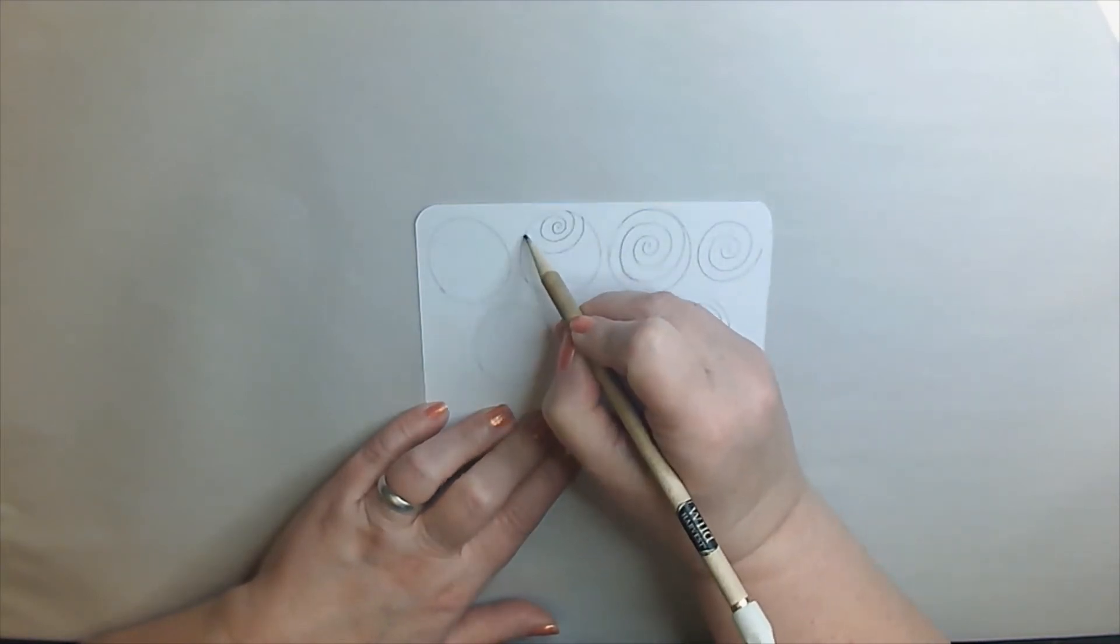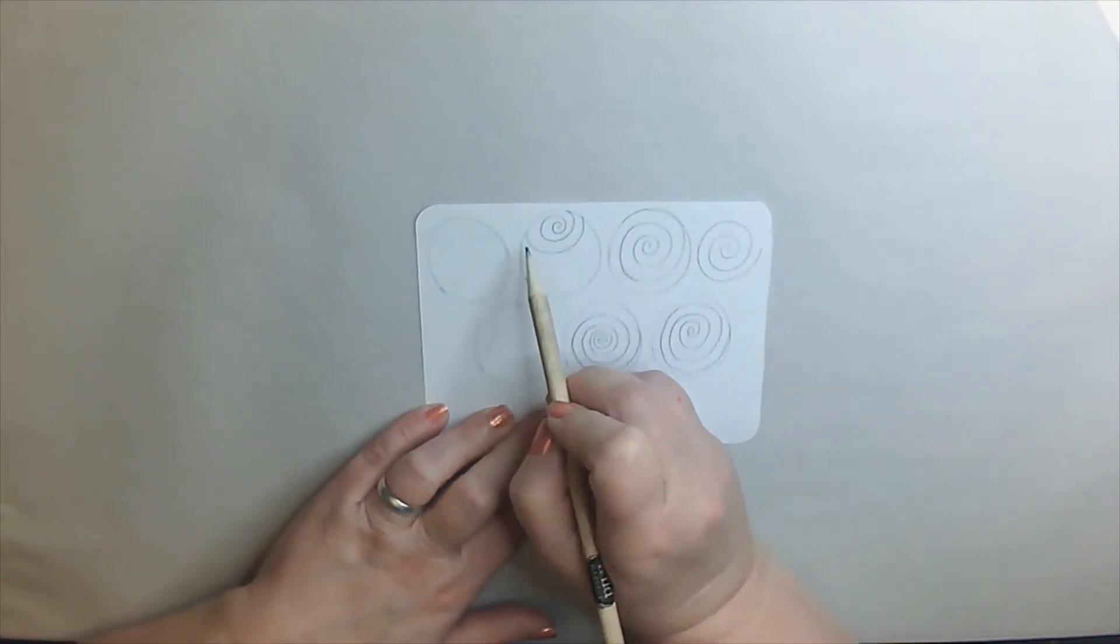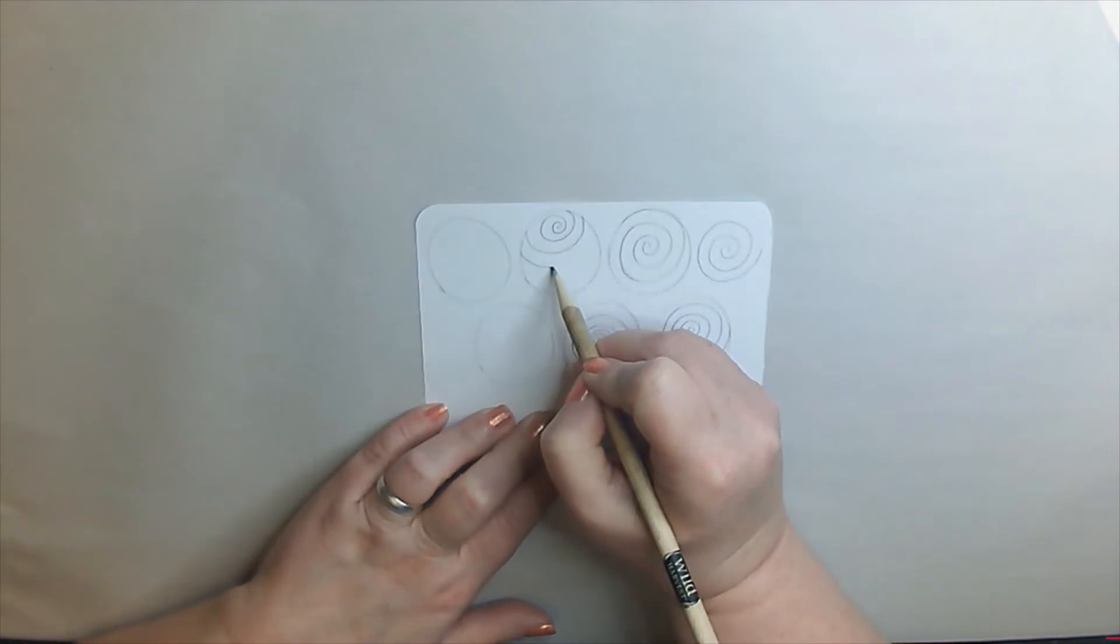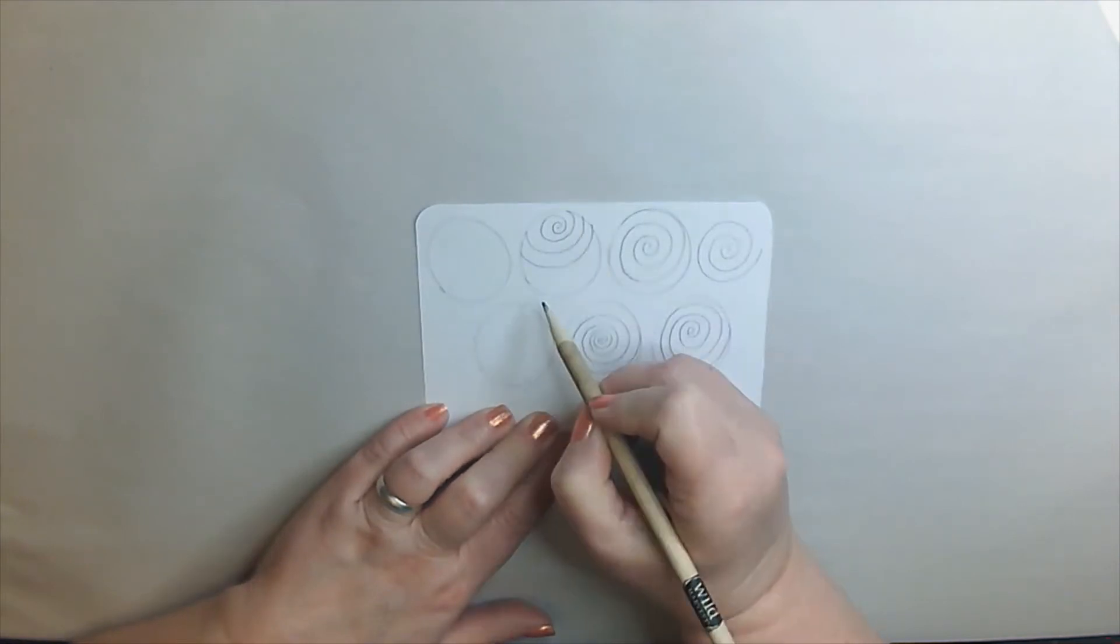Then pretend you're doing the same thing and start up at the top corner of that just as if you were drawing it and give it a little space and draw another line over. And see how it's just kind of line, line.